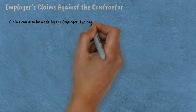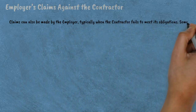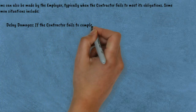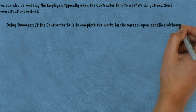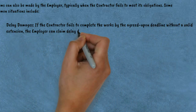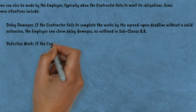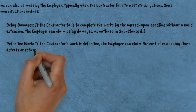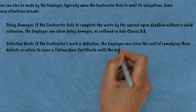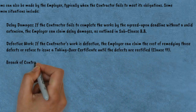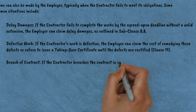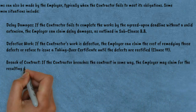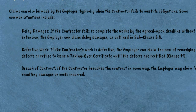Fourth, employer's claims against the contractor. Claims can also be made by the employer, typically when the contractor fails to meet its obligations. Common situations include: delay damages — if the contractor fails to complete the works by the agreed-upon deadline without a valid extension, the employer can claim delay damages as outlined in Sub-clause 8.8; defective work — if the contractor's work is defective, the employer can claim the cost of remedying those defects or refuse to issue a taking-over certificate until the defects are rectified (Clause 11); and breach of contract — if the contractor breaches the contract, the employer may claim for the resulting damages or costs incurred.